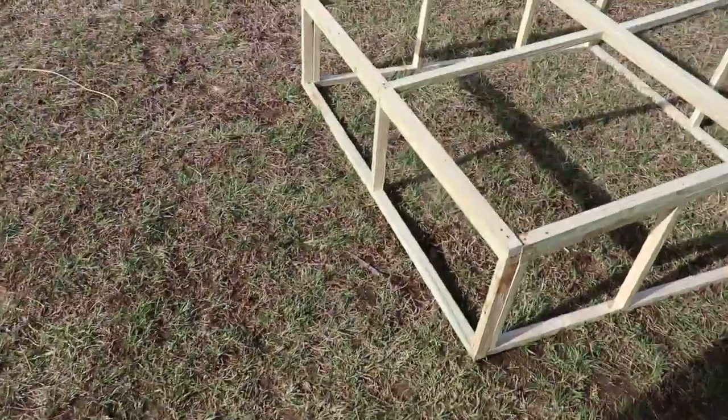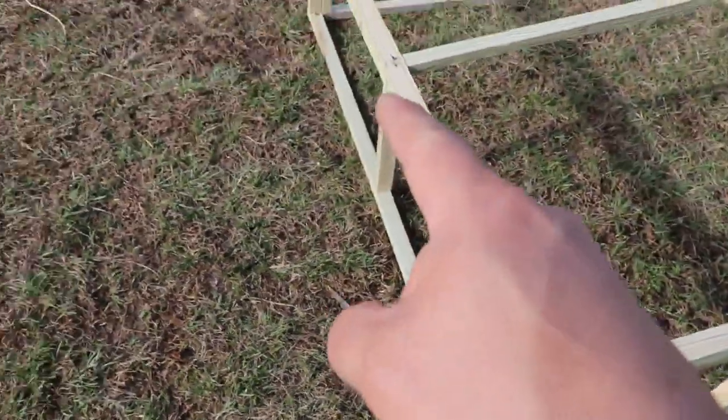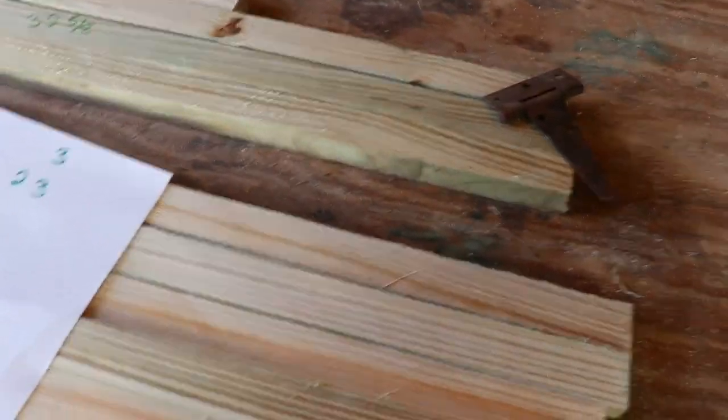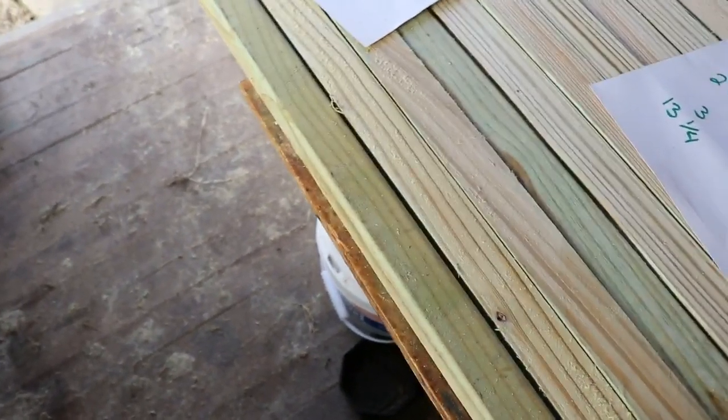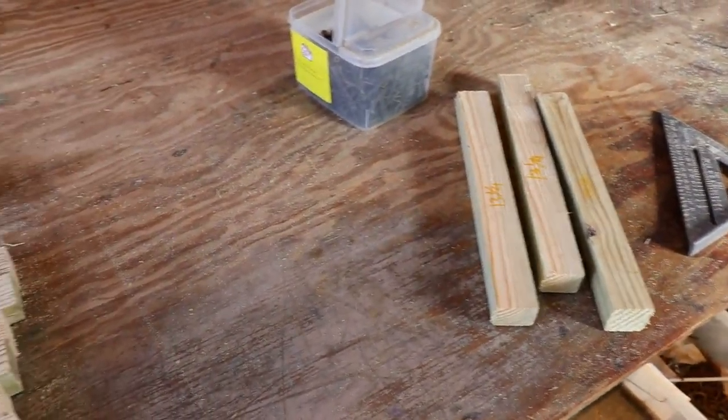All right, now it's time to build the back wall. Come over here. Once again, we've got three at 13 and 1/4. Get those three and then two more of your five-footers. All right, we'll build them again the same way as the last one. This is what it should look like when you're done. Okay, so there's one end put all together.